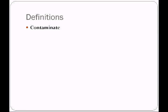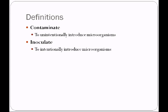Another definition to be familiar with is contaminate. Contaminate is unintentional — it is to unintentionally introduce microorganisms into an environment. Inoculate, on the other hand, is intentional. We intentionally introduce microorganisms onto petri plates, for example, in order to encourage them to grow.